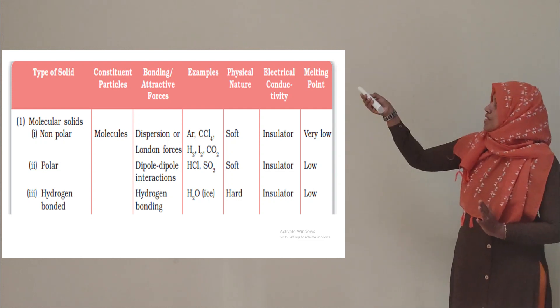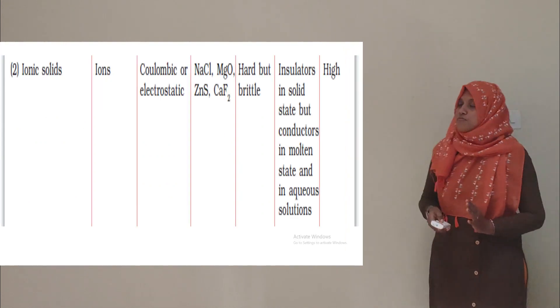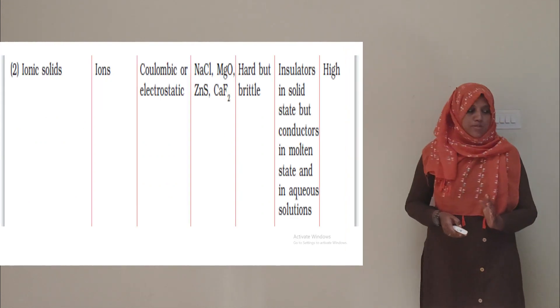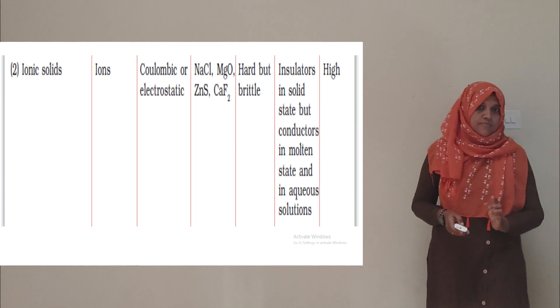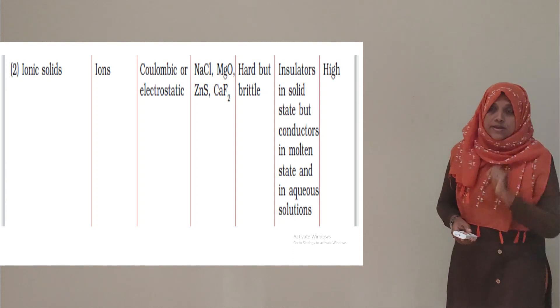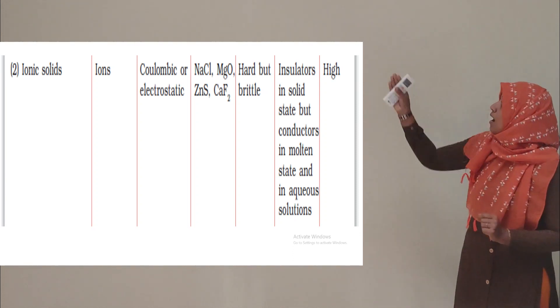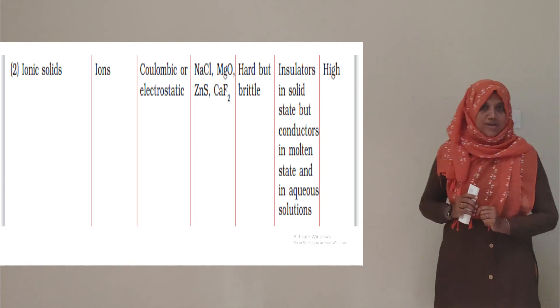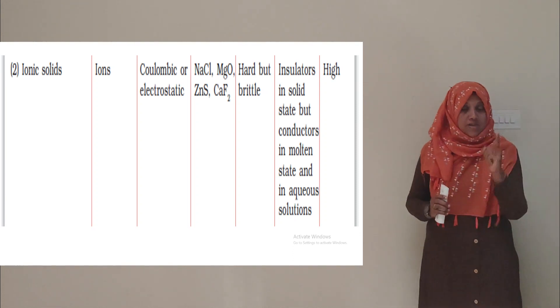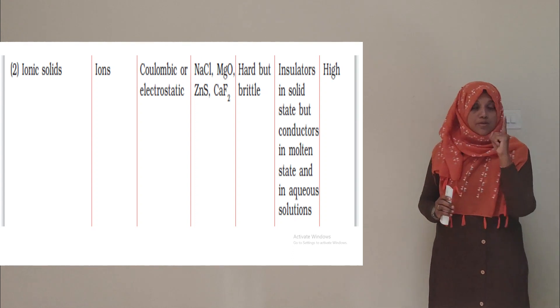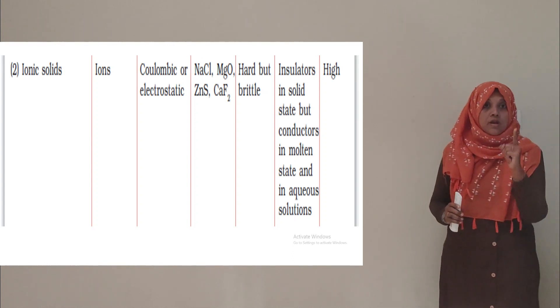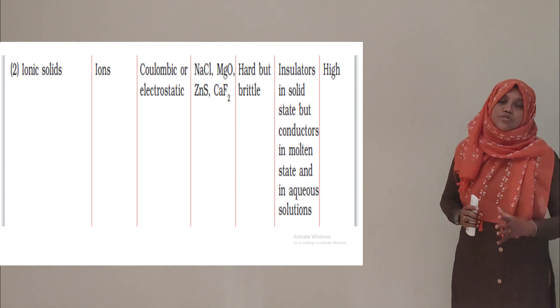The second type of crystalline solid is ionic solid. The other type of crystalline solid is ionic solid.